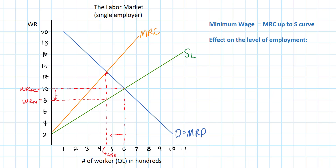So the next question is: what happens if the government imposes a minimum wage in this labor market — a price floor above eight dollars that makes it illegal for this monopsonistic employer to pay its workers only eight dollars per hour? Let's set a minimum wage at ten dollars and see how that would affect the equilibrium level of employment in this market. With the minimum wage of ten dollars, the marginal resource cost of hiring up to 600 workers actually becomes ten dollars.